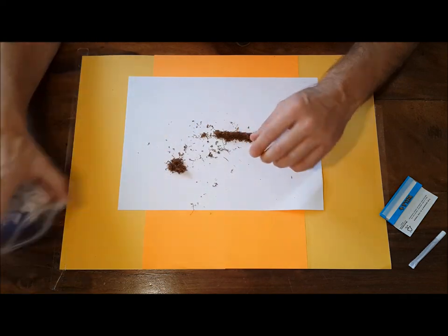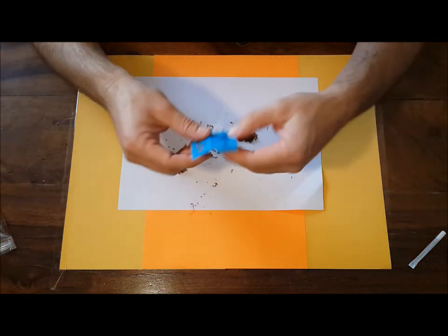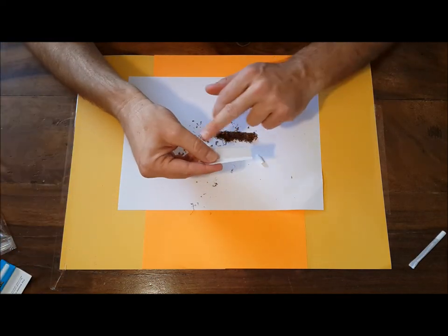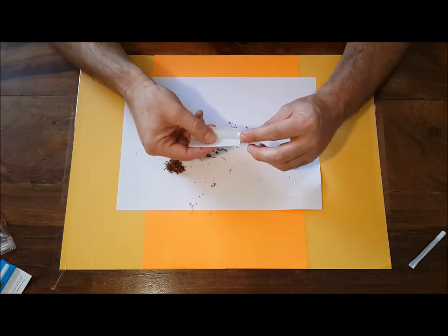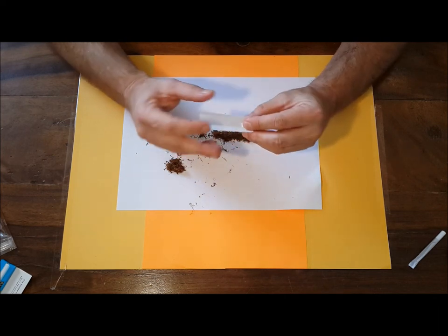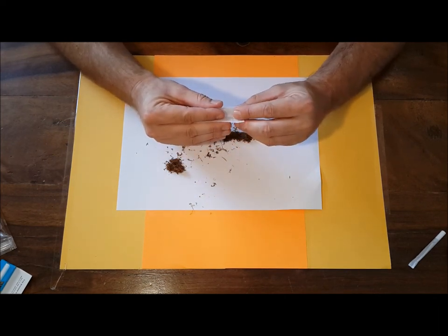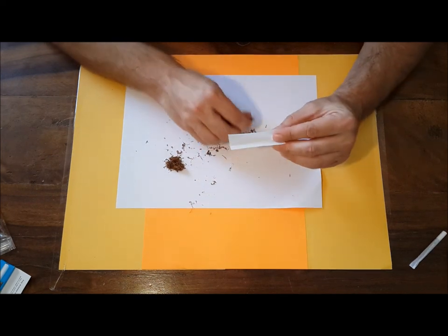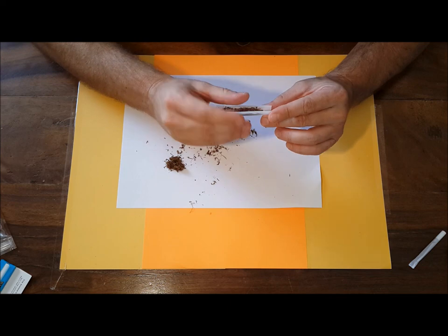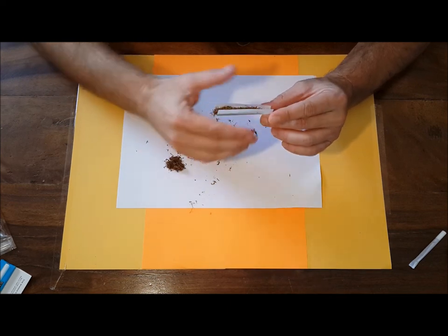Great. Then I take the filter and another paper. Remind you, the glue is here near me. Put the filter and hold it, hold it in three fingers, and put the tobacco. Very, very easy.